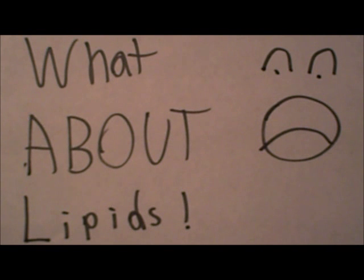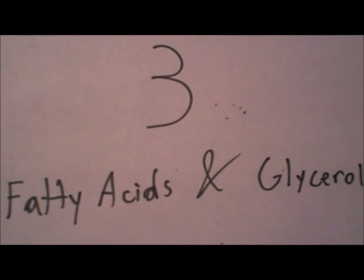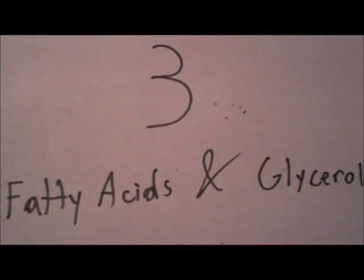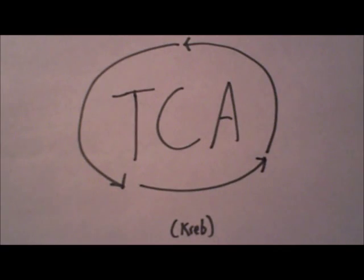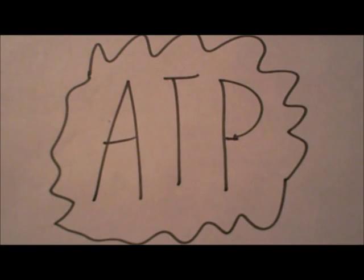What about the lipids? I'll tell you about the lipids. Lipids are made of three — yes, three — fatty acids and glycerol. Both the glycerol and the fatty acids are turned into pyruvate, then enter the TCA or Krebs cycle to make more ATP.